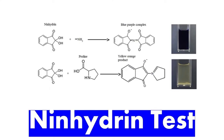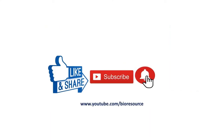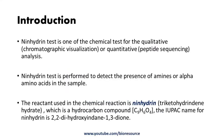Welcome back to the channel. Today we're going to discuss the ninhydrin test. Ninhydrin test is one of the chemical tests used for qualitative or quantitative analysis. This test is performed to detect the presence of amines or alpha amino acids in a sample.